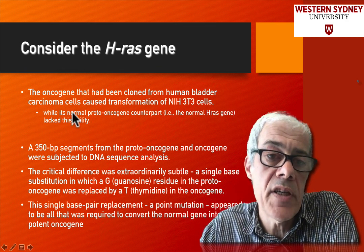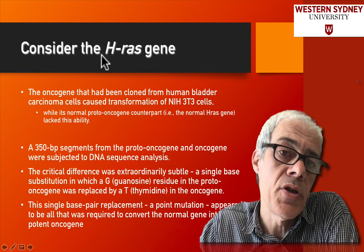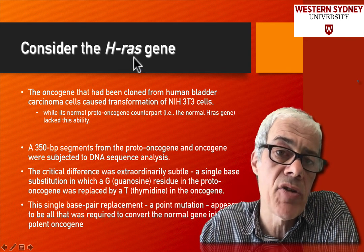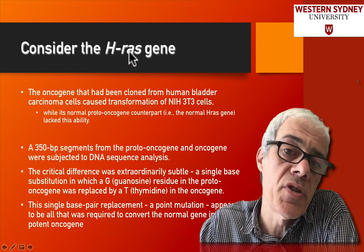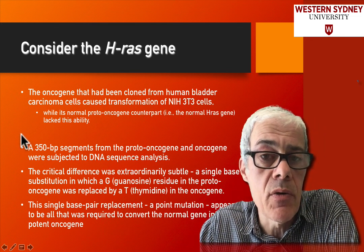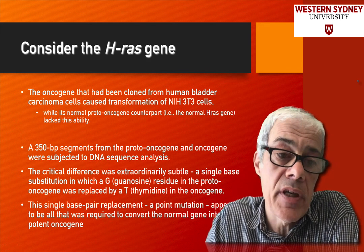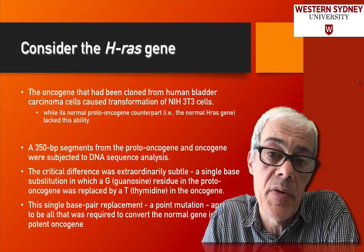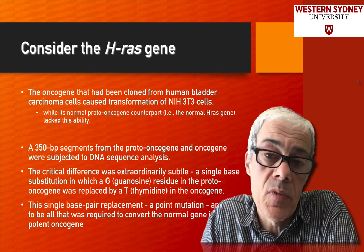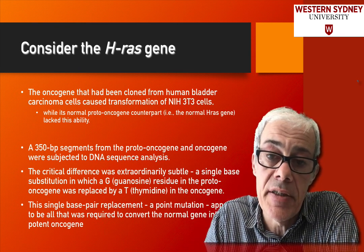One of these important human cellular genes that was identified from a viral genome was the RAS gene. And it turns out, now that you know what you're looking for, if you look for this RAS sequence in human cancers, you often find that this RAS sequence is mutated.